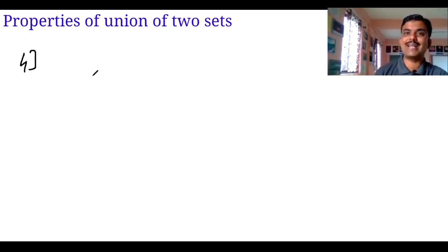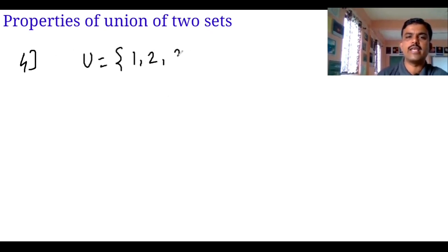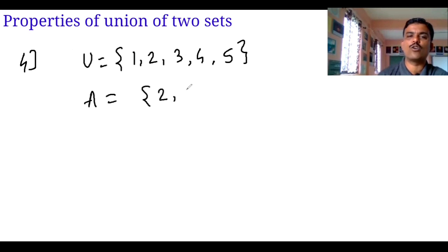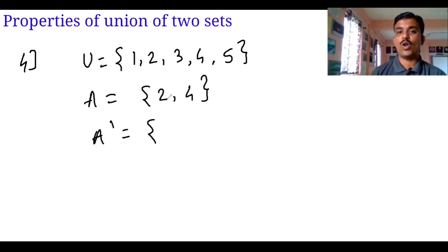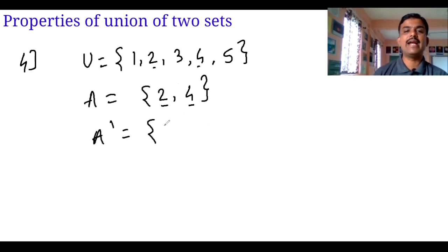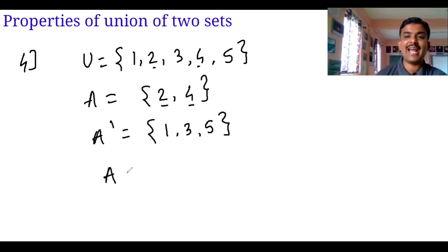Now we are taking the next property. Let the universal set U be equal to {1, 2, 3, 4}. A is always a subset of the universal set, so let A equal {2, 4}. Now I want A dash — the complement of A. It is the set of all elements which are in U but not in A. So removing those elements, A dash becomes {1, 3}. Now I am going to take A union A dash.